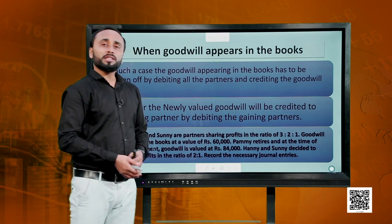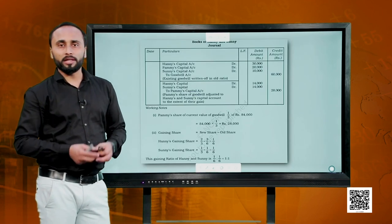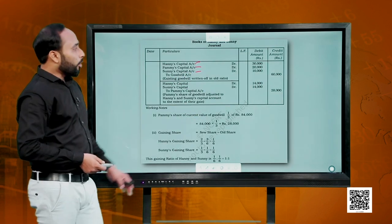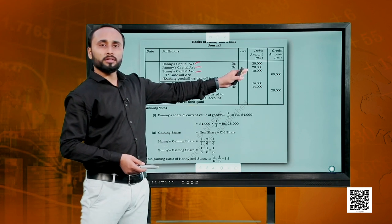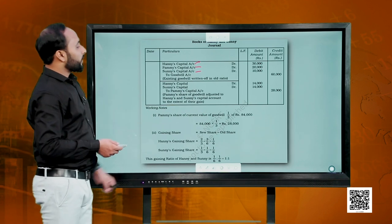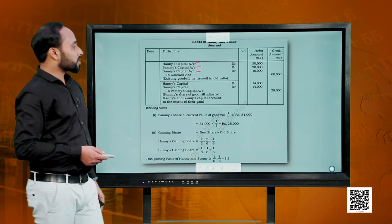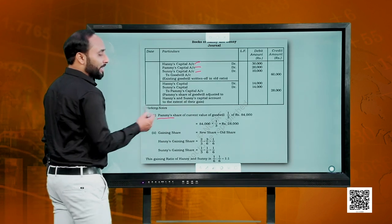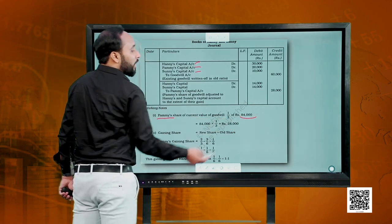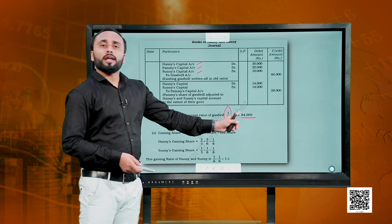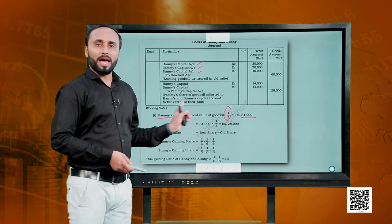The first thing we have to do is write off the old goodwill in the old ratio by debiting all the partners in ratio 3:2:1 and crediting the goodwill account with its full value. Thereafter, we have to give the retiring partner her share of the new goodwill. The goodwill of the firm is 84,000. Pammy's share was 2/6, which is 1/3, so one-third of 84,000 comes to 28,000 — that is Pammy's share.